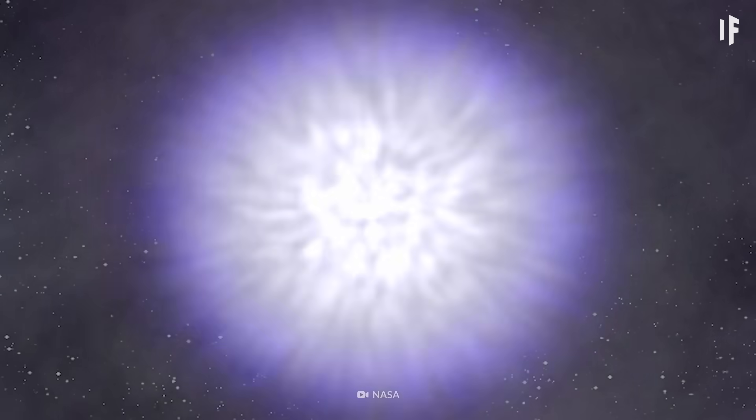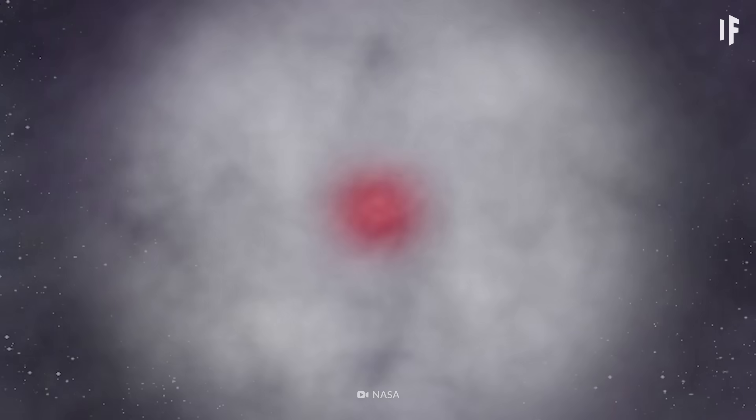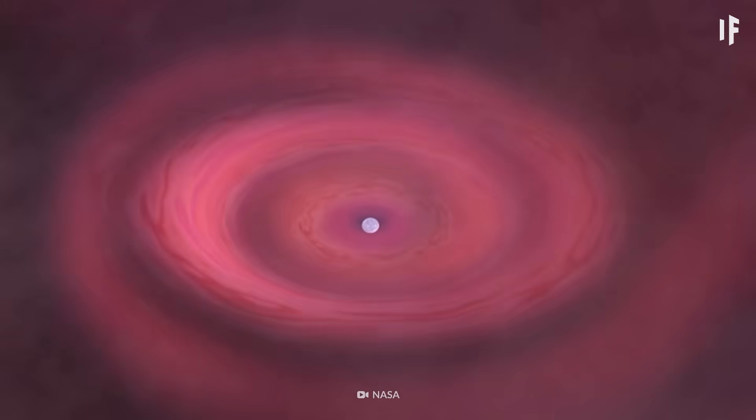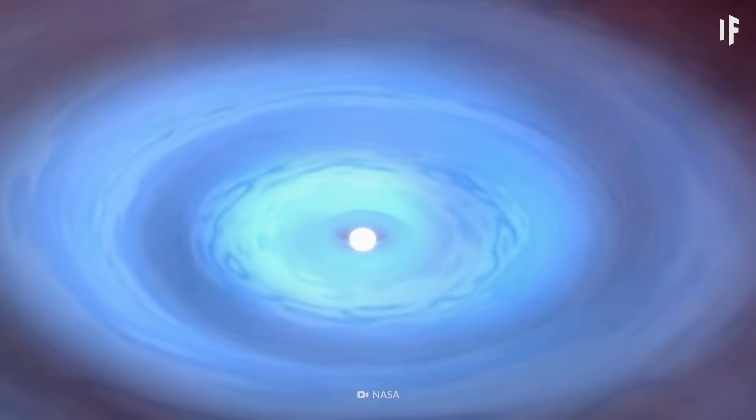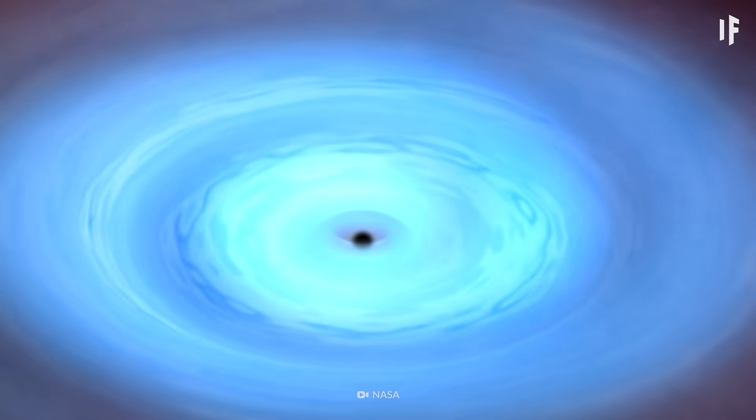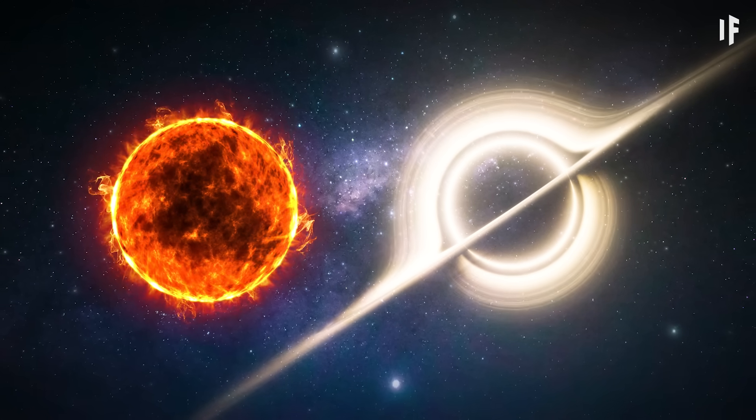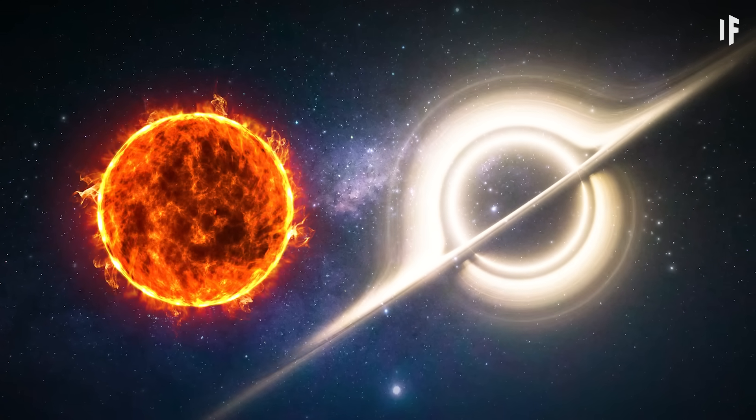And there's a second way. Stellar mass black holes form when a massive star explodes and dies, leaving behind a very dense core, which is the black hole. These are smaller, with masses just a few times that of our Sun.